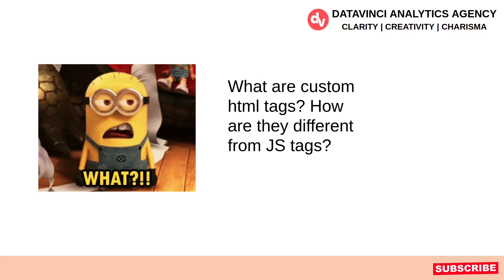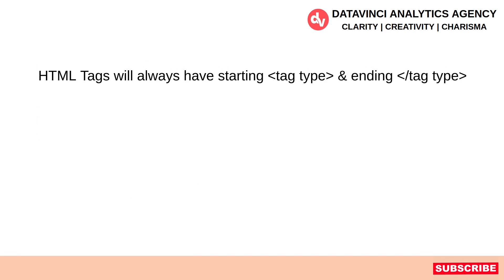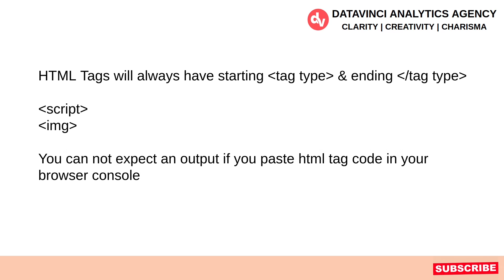But before that, what are custom HTML tags and how are they different from JS tags? HTML tags will always have a starting and ending tag type — for example, mostly a script tag or an image tag. When you get a code from your marketing or analytics vendor, that is a custom HTML code that you need to put on all the pages on your site or on certain interactions.